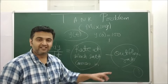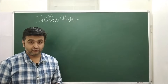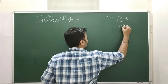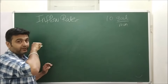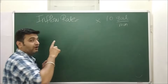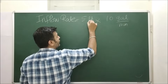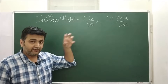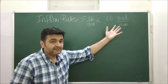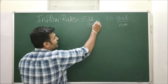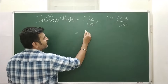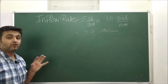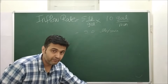To find the inflow rate: 10 gallons per minute is coming in from the inlet pipe, and each gallon contains 5 pounds of salt. So the rate of salt coming in is 10 gallons/min × 5 pounds/gallon = 50 pounds per minute. Salt is entering at the rate of 50 pounds per minute.